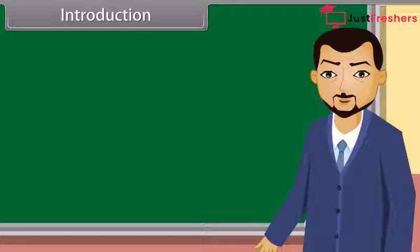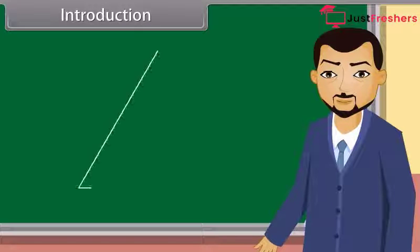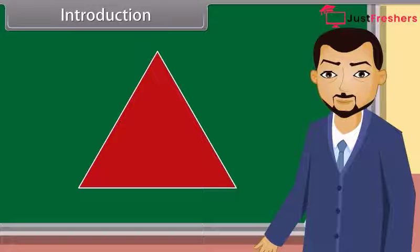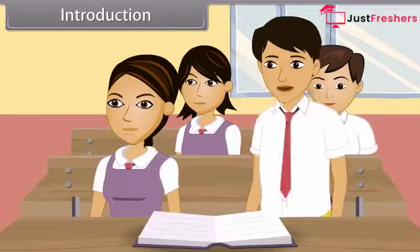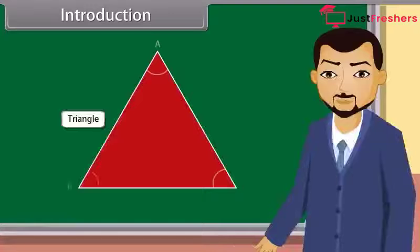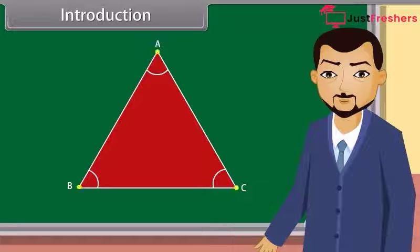Students, you must have studied about closed figures. Now, what do we call the figure which is formed by three intersecting lines? A triangle! Yes, you are right, Rahul — a triangle. It has three sides, three angles and three vertices.